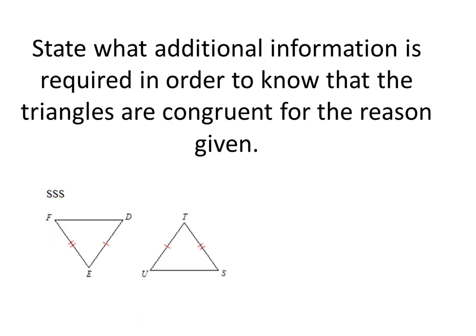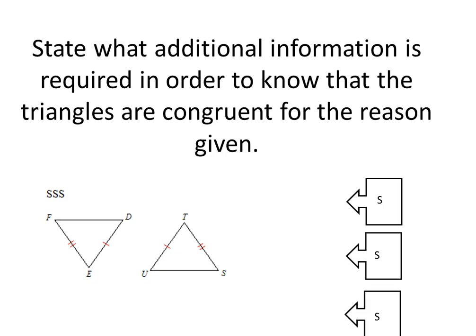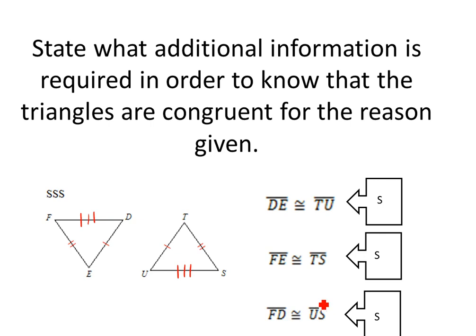Next we have side-side-side, so we need three pairs of congruent sides. We have our first pair: DE is congruent to TU because they both have one hash mark. Then FE is congruent to TS. So now we just need one more set of congruent sides. The additional information we would need is that side FD is congruent to US — then we'd have side-side-side.